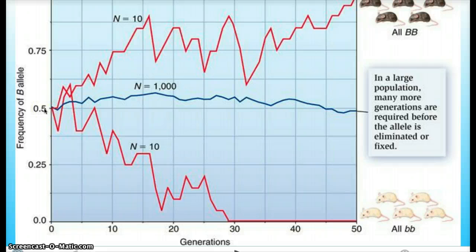As for the other population with ten mice, it goes the other way. It favors the small b's.